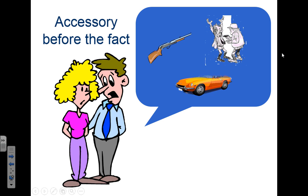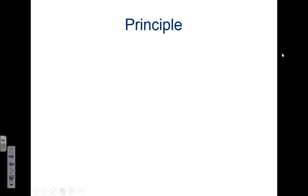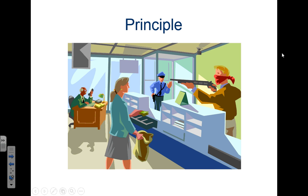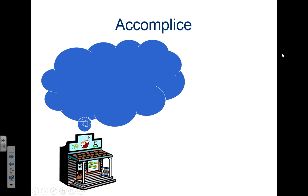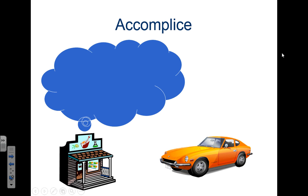So they plan out this crime and they're going to get a getaway car. The principal is the person who actually carries out the crime — the person in the store robbing the clerk, that's the principal. An accomplice is someone who is present during the crime, but not participating at the same level as the principal.